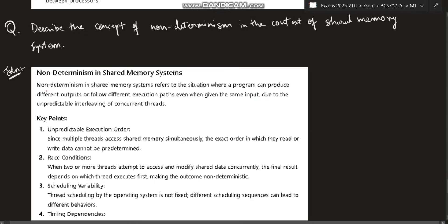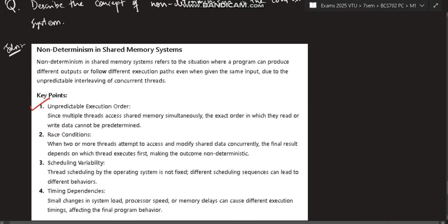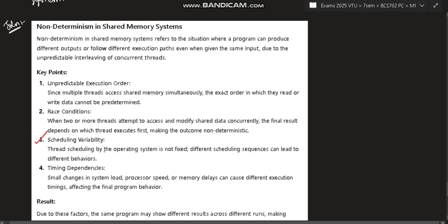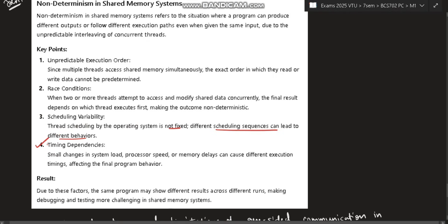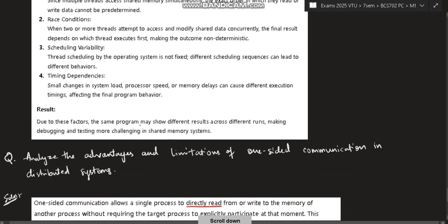So key points are unpredictable execution order. Race condition means if two processes are there, they are trying to access the data. Whichever accesses the data first, they will be able to make change to it and the other process will get the updated data, not the original data. That is the race condition. And scheduling variability - thread scheduling by the operating system is not fixed. Different scheduling sequences can lead to different behaviors. Timing dependencies - different times in which the execution happens and the accessing of the data happens, different data can be fetched. So that will be a disadvantage. Result will be due to this factor, the same program ensure different results across different times, making the debugging and testing more challenging in the shared memory system. So that's one disadvantage of the shared memory system, the non-determinism. We cannot exactly know what it's going to access.